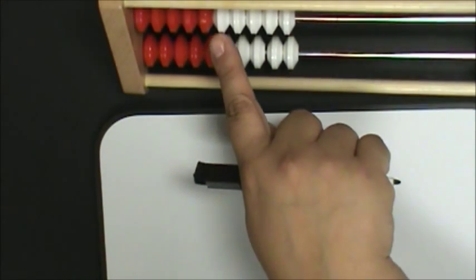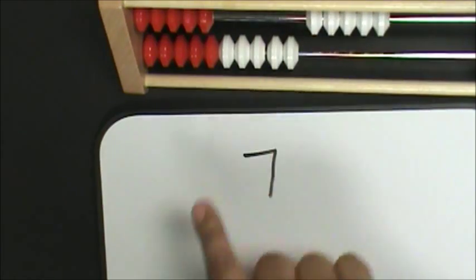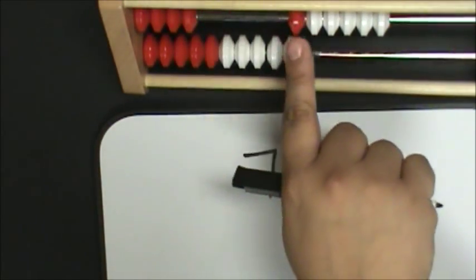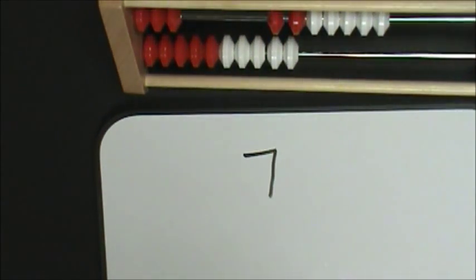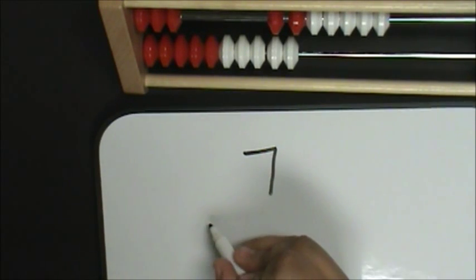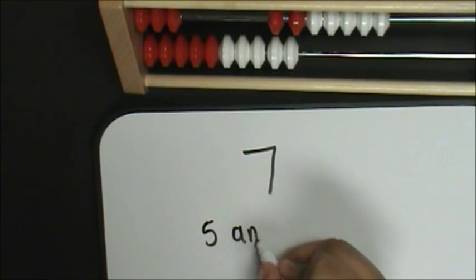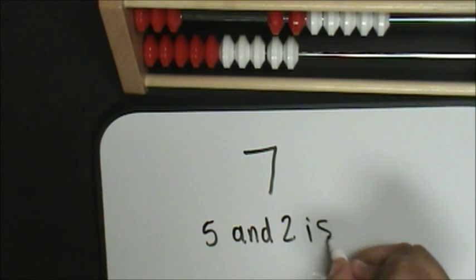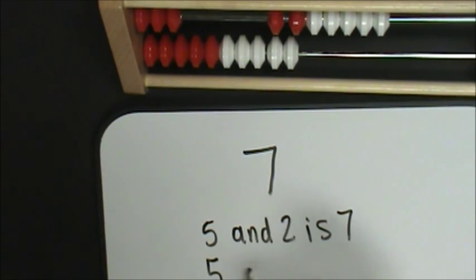So I know this group of white beads is five, six, and seven. That is one way to make seven. Five and two is seven, or five plus two equals seven.